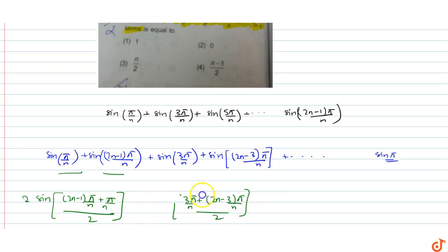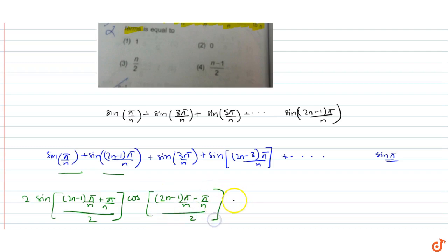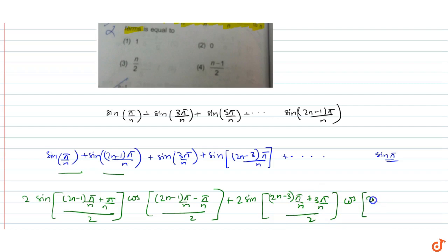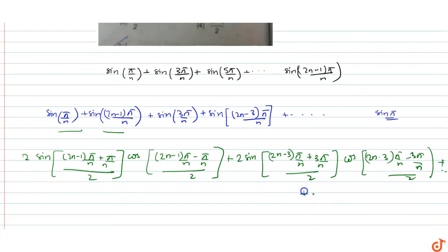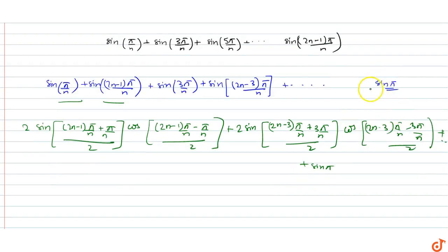Sorry, a small mistake was made — there is also a cos term that was forgotten. So we get cos((2n-1)π/n − π/n)/2, plus 2·sin((2n-3)π/n + 3π/n)/2 · cos((2n-3)π/n − 3π/n)/2, and so on, plus sin(π). The sin(π) term arises because one term sin(2nπ/n)/2 remains.